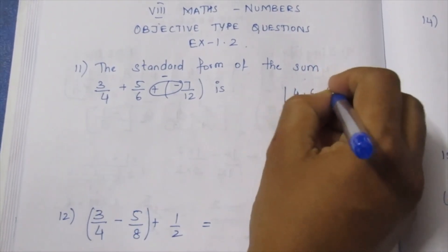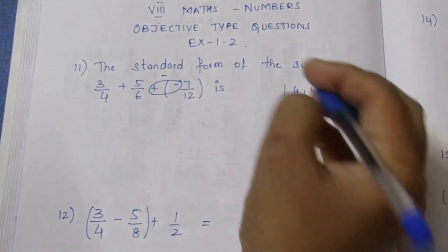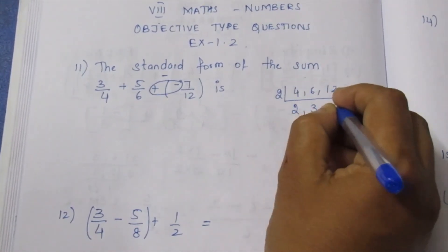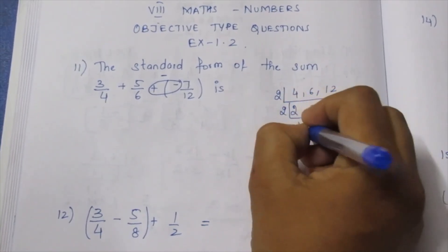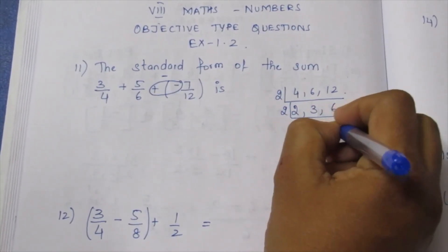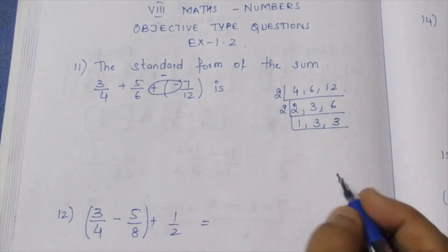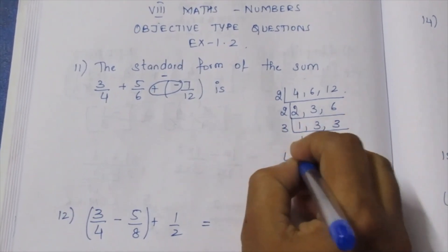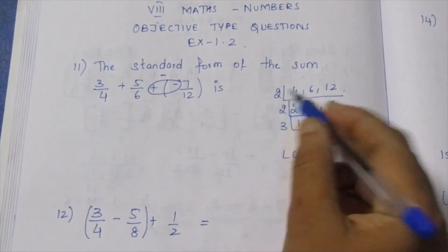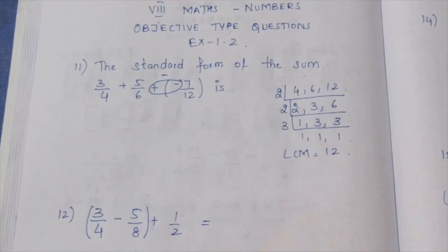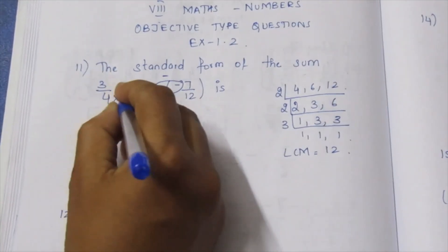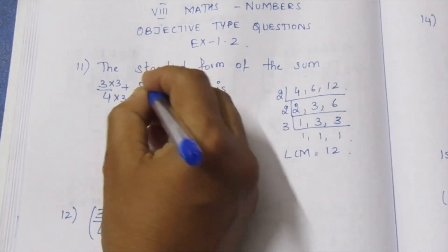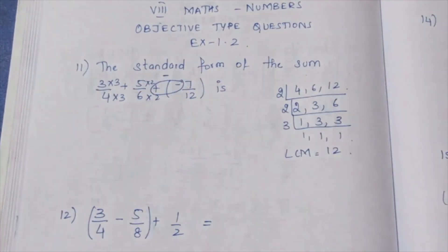The denominators are 4, 6, and 12. Finding the LCM: 2 times 2 is 4, 2 times 3 is 6, 2 times 3 is 6. So 3, 3, 1. LCM: 3 times 2 is 6, 6 times 2 is 12. So the LCM is 12. Now converting all fractions to have denominator 12.